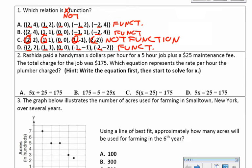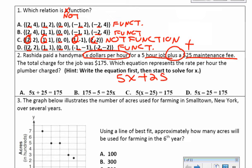Number 2: Rashida paid a handyman x dollars per hour for a 5-hour job, plus a $25 maintenance fee, and the total charge was $175. Which equation best represents the rate per hour? You don't actually have to solve — you're just choosing the correct equation. 5x plus 25 equals 175. The equation that matches is choice A.